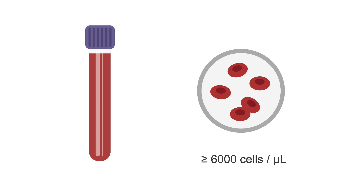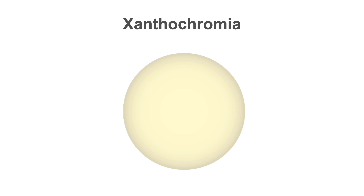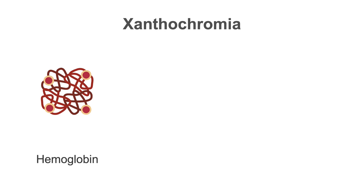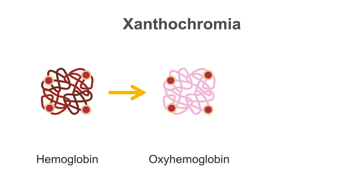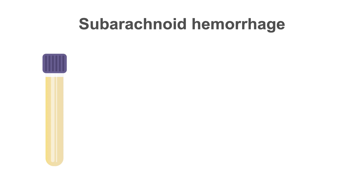Cerebrospinal fluid will appear grossly bloody if 6000 or more red blood cells per microliter are present. Red blood cells rapidly lyse after entry into the CSF and cause xanthochromia, a discoloration of the CSF. The breakdown of hemoglobin — first to oxyhemoglobin, which appears pink, and later to bilirubin, which appears yellow — leads to the yellow or pink discoloration known as xanthochromia.